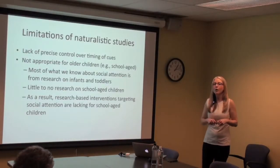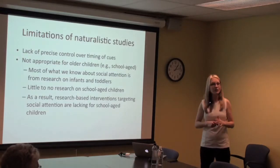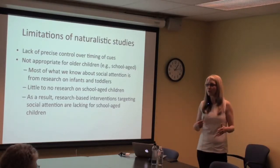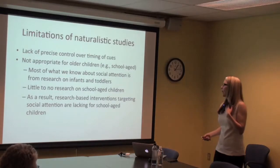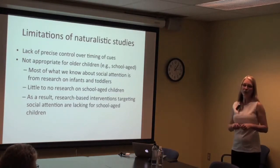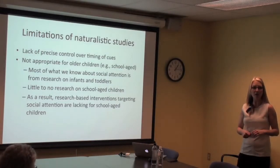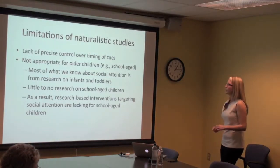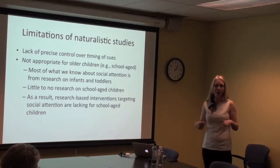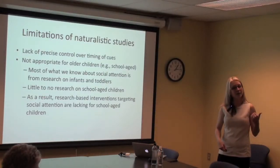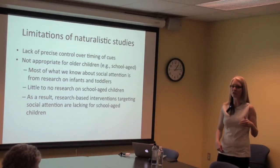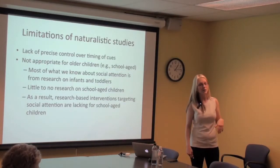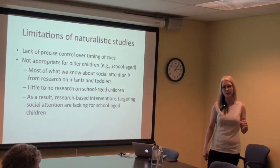As a result, most of what we know about social attention in autism spectrum disorders comes from research with infants and toddlers, because that's the age group for which this paradigm is appropriate. There's very little research on school-aged children and adolescents. Consequently, most interventions aimed at improving social attention are geared towards really young kids — there simply aren't interventions targeting social attention in older children and adolescents.